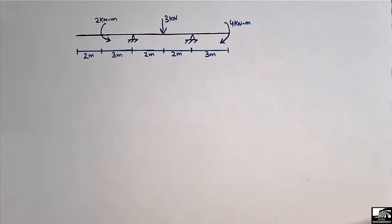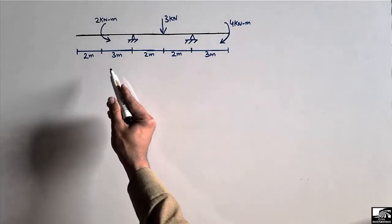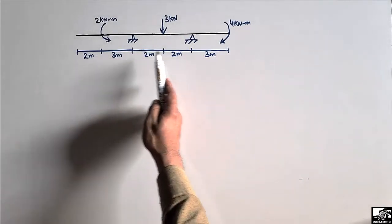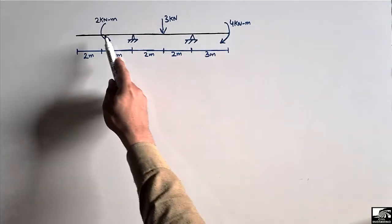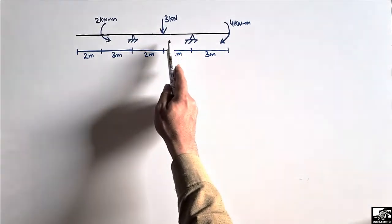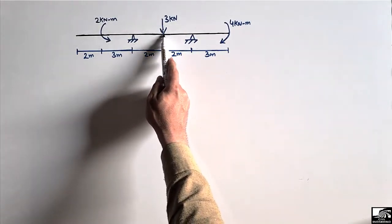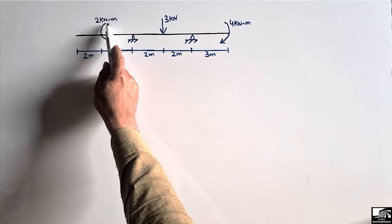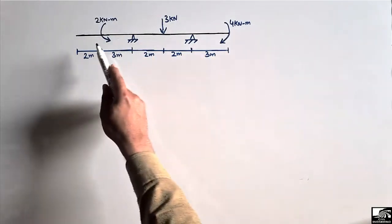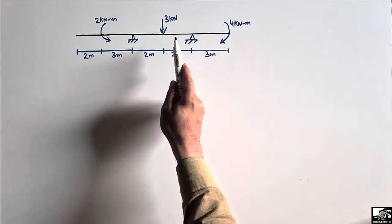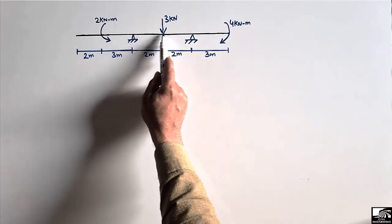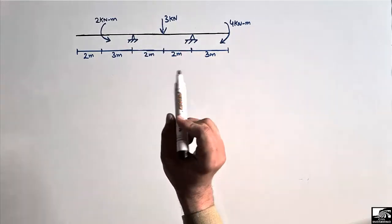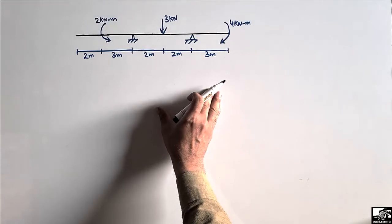Welcome back to the civil engineering YouTube channel. In today's lecture we are going to analyze an overhanging beam with given dimensions. There are different forces acting on this beam: two moments of 2 kN·m and 4 kN·m acting at different points, and a concentrated load of 3 kN acting at the center of the simply supported portion. We have to find the support reactions and draw the shear force and bending moment diagram.